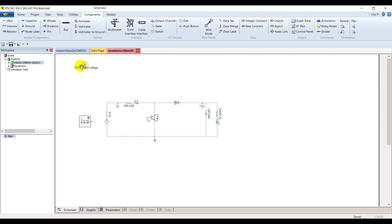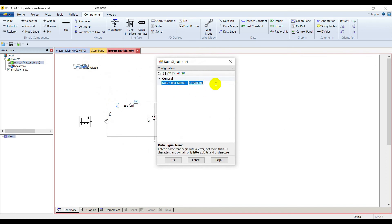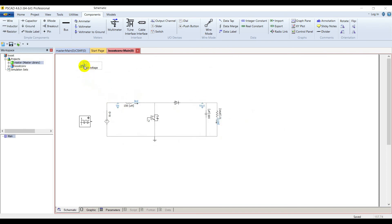In this way we are going to put output channels for all our signals. Pick a data label, place it in the input of output channel and name it V in. We have placed output channels for all our signals.